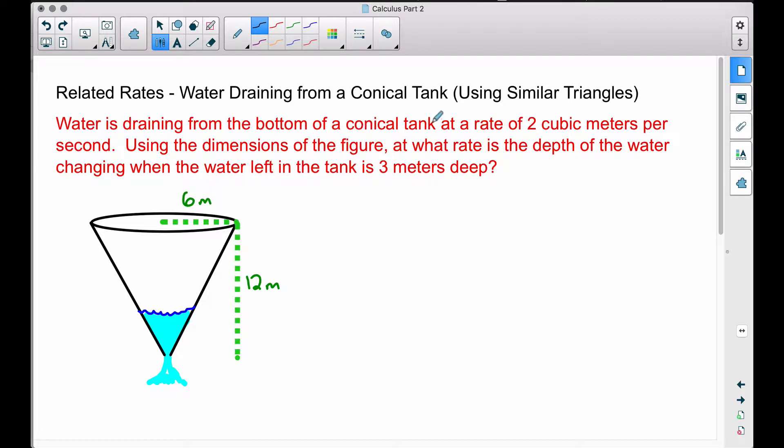Water is draining from the bottom of a conical tank at a rate of 2 cubic meters per second. Using the dimensions of the figure, at what rate is the depth of the water changing when the water left in the tank is 3 meters deep?